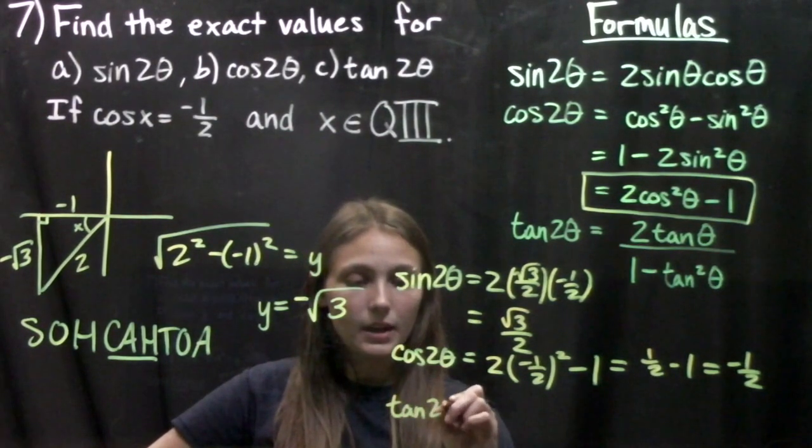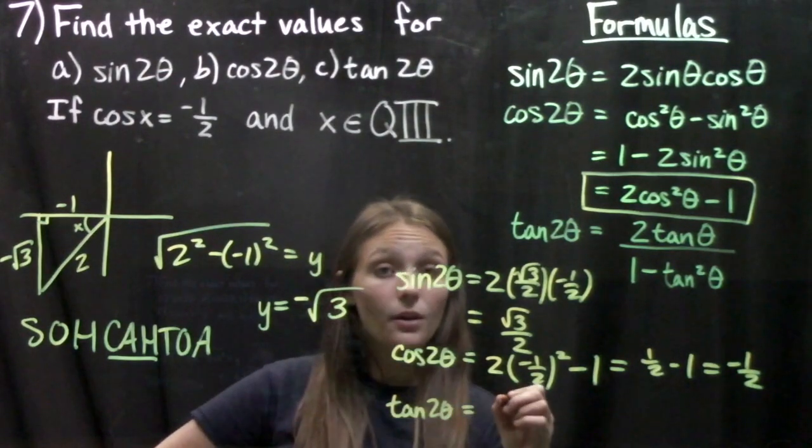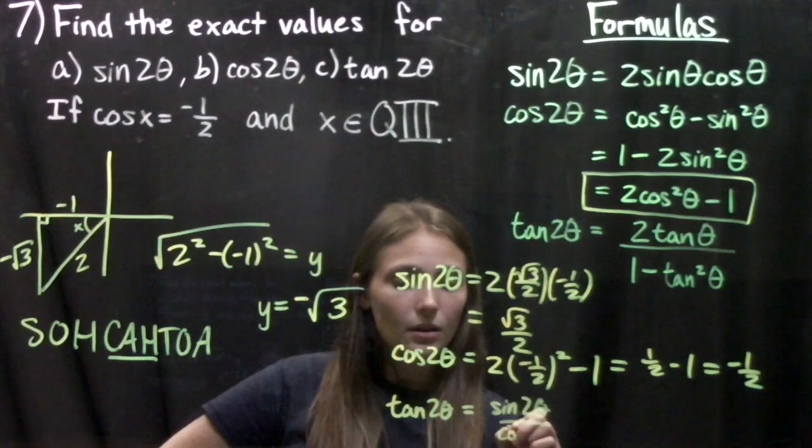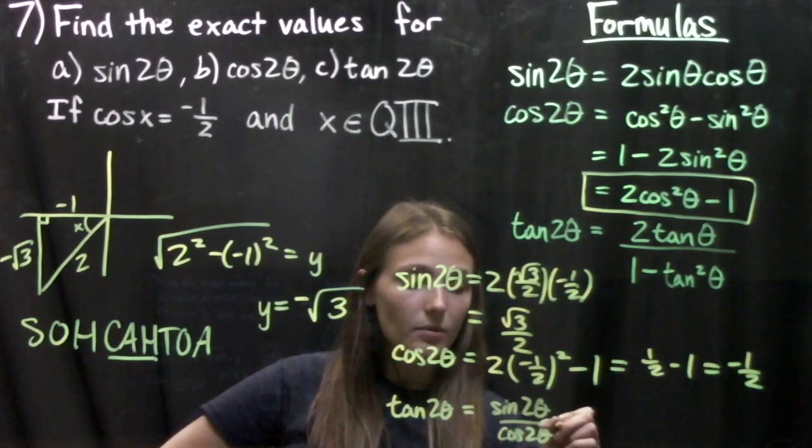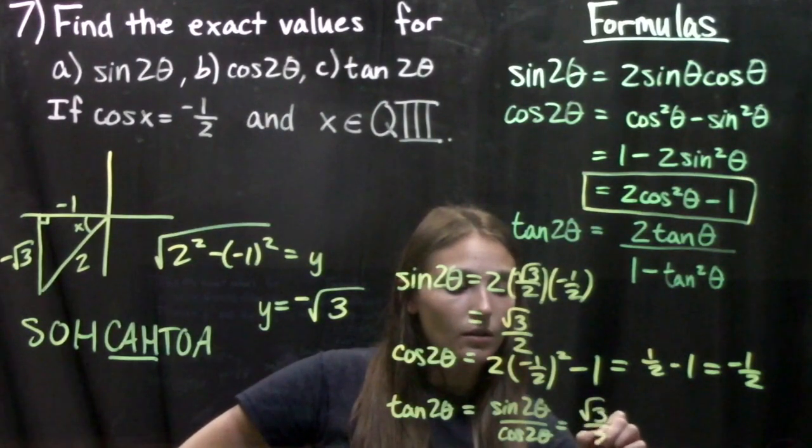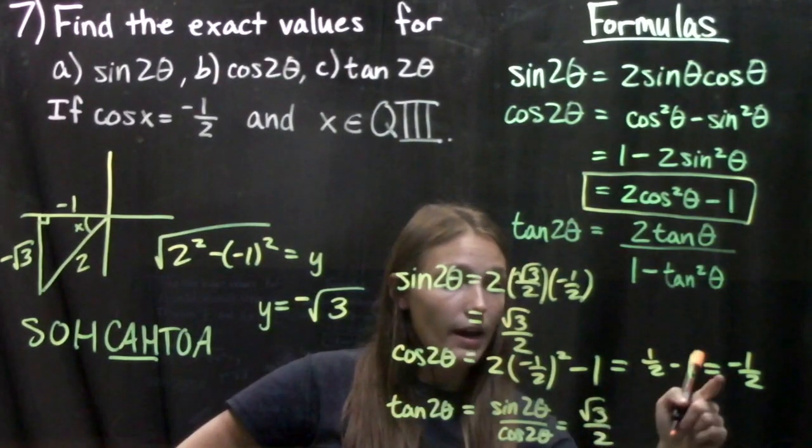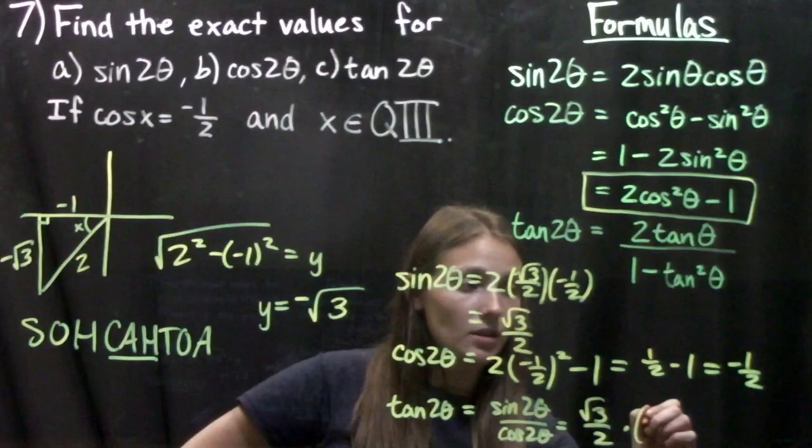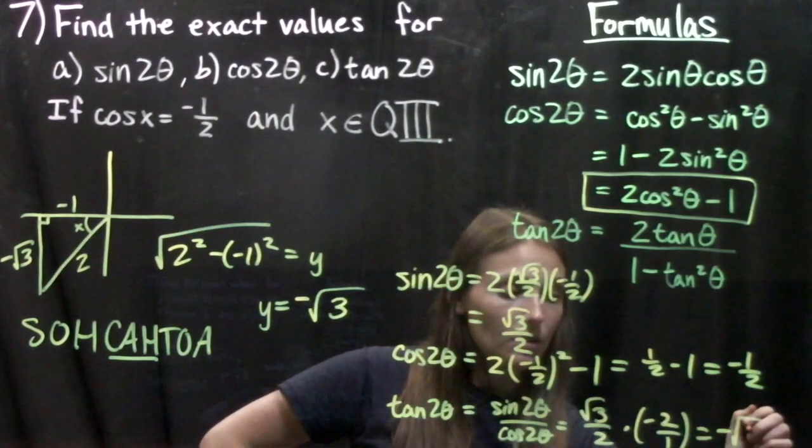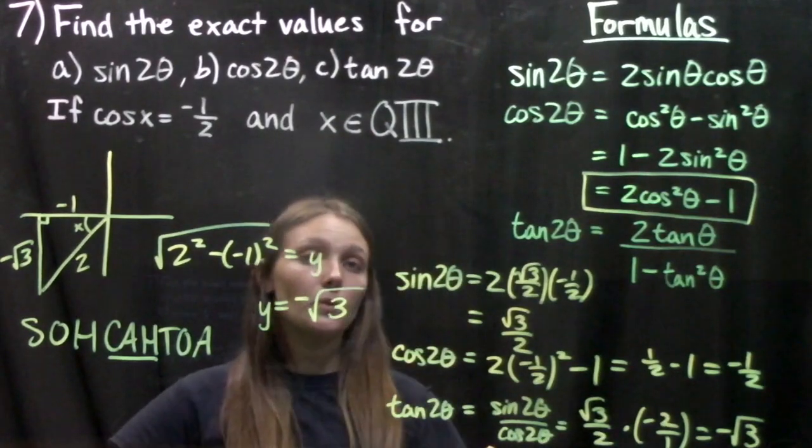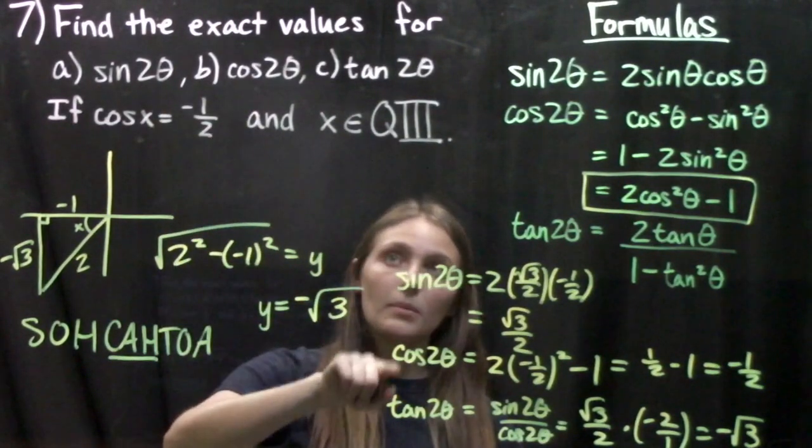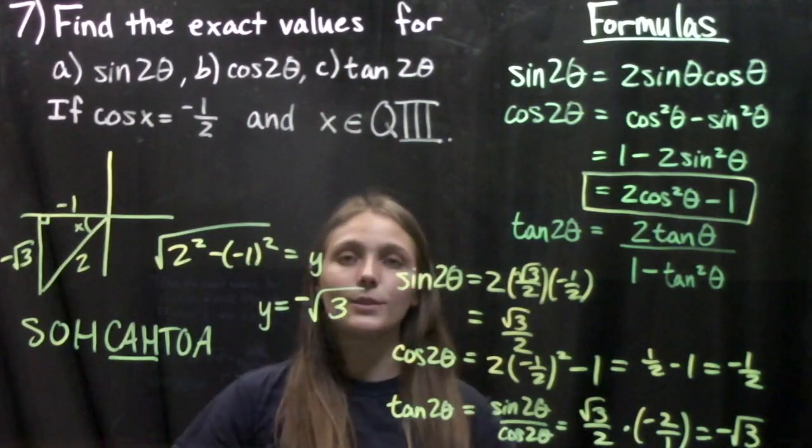Then when we do our tangent of the double angle we know that this is the sine of the double angle over the cosine of the double angle. So we take our root 3 over 2 divided by negative half, or times the reciprocal, so we get the tangent equals negative square root of 3. So we've found our sine, cosine, and tangent of the double angle.